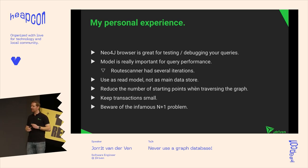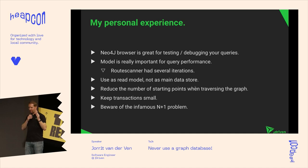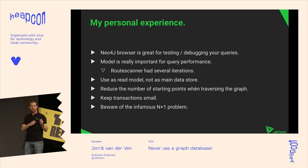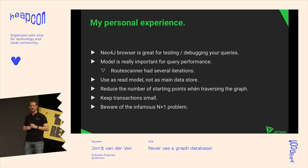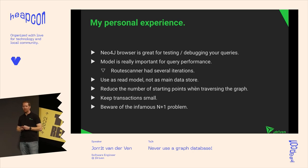If you're going to traverse the graph and want good performance, make sure you reduce the number of starting points. In my earlier example of finding the shortest path to Keanu Reeves, I had to specify a node of type Person with a specific name. If I just said "give me any node with maximum six steps," it would start traversing all relations of every node — you can imagine how intensive a depth-first search like that would be. Reducing the number of starting points will really increase query performance. Also, keep transactions small.